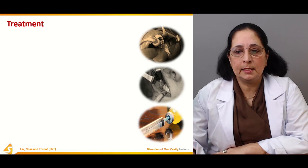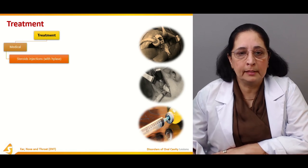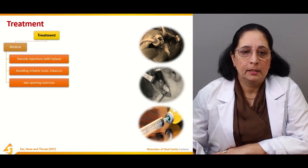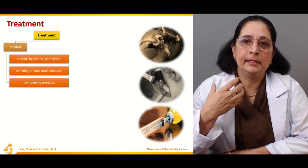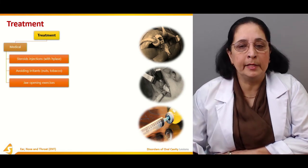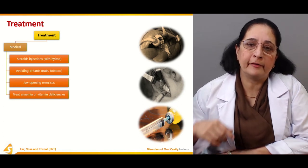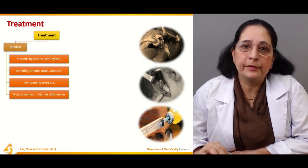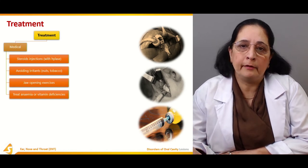Treatment is medical, which includes steroid injections with hyaluronidase, avoiding irritants like nuts and tobacco, and jaw opening exercises. Because of the trismus there is difficulty in opening the mouth, so exercises to increase the mobility of the mouth are helpful. Anemia or vitamin deficiencies should be treated with good nutrition and supplements.